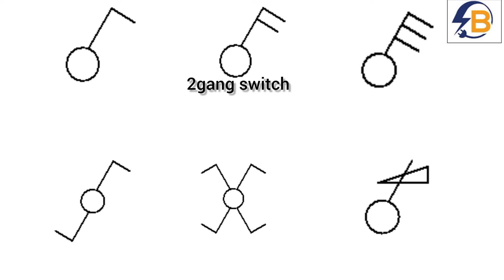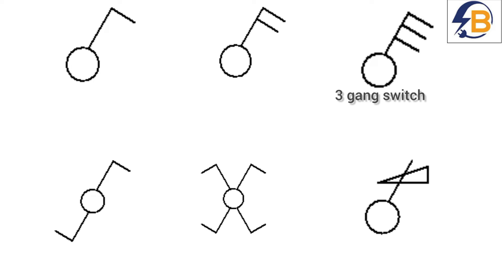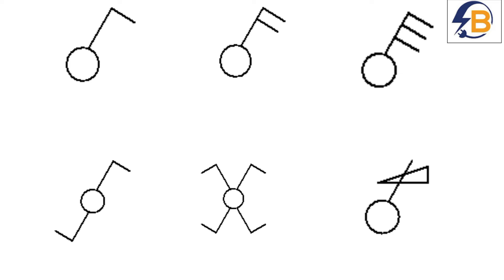If you want to have a look at how the real switches look like, I have another video with the title 'House Wiring Materials Name List' where you'll see most of these types of switches and I explain why they are called by their names. Then this is a three-gang one-way switch. And when we come down here, this is a two-way switch.